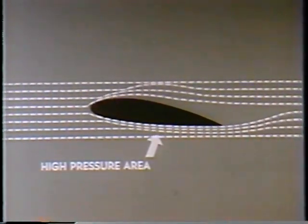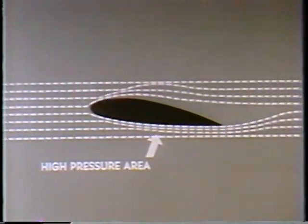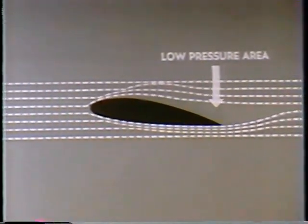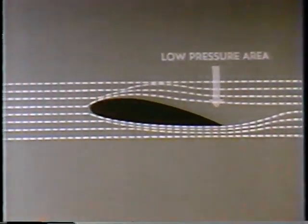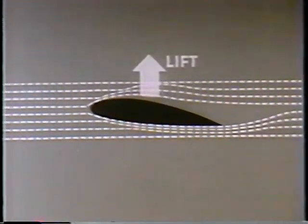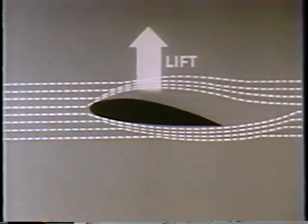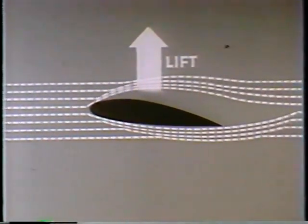The cause of dissymmetry of lift is fairly simple. Lift, as we know, is produced by the passage of air over an airfoil. The air passing under the airfoil is compressed, forming a high-pressure area. The air passing over is accelerated, forming a semi-vacuum, or low-pressure area. This results in the creation of the force called lift. The faster the air passes over the airfoil, the greater is the lift produced. All other factors being equal, lift will vary as the square of the velocity.